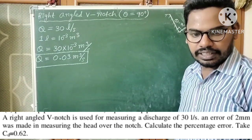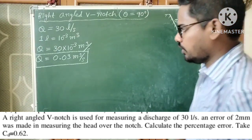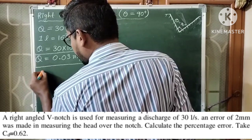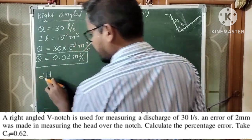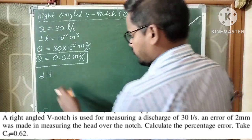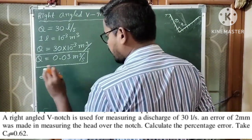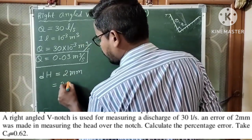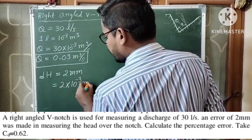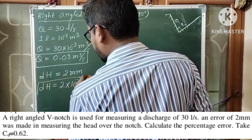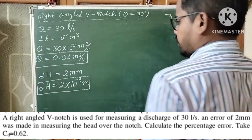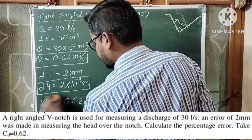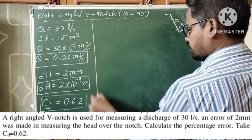There is an error of 2 mm made in measuring the head over the notch. The error in measuring the head over the notch is denoted by DH. So DH equals 2 mm. Converting to meters: DH equals 2 into 10 to the power of minus 3 meters. The coefficient of discharge CD is equal to 0.62.